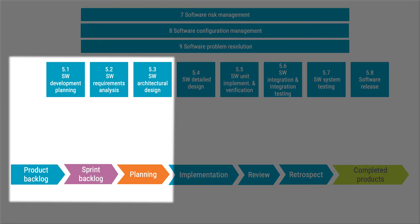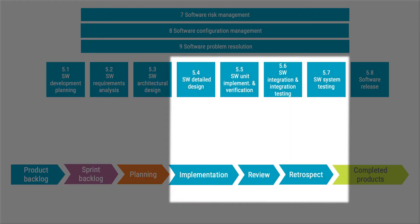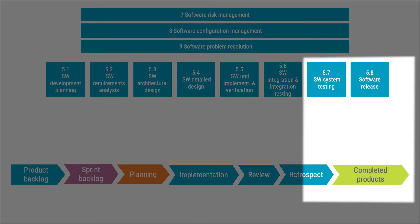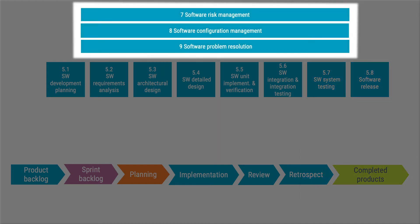In the first three activities of the standard, we have software development planning, software requirement analysis, and software architecture design. Here I argue that you can find many similarities with what in Scrum is called product backlog, sprint backlog, and planning. In the next part, you find actual coding work and confirmation that implementation meets defined requirements. Yes, the words and terminology are different, but the purpose and goal is very similar. Lastly, you find software release - depending on the system you're working with, this can be a full product release, or a software release which will be integrated with other systems such as hardware. In the standard, you also have other supporting processes, but I'll leave them for other videos.